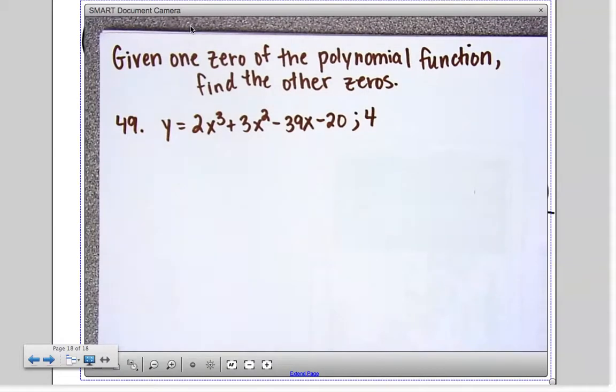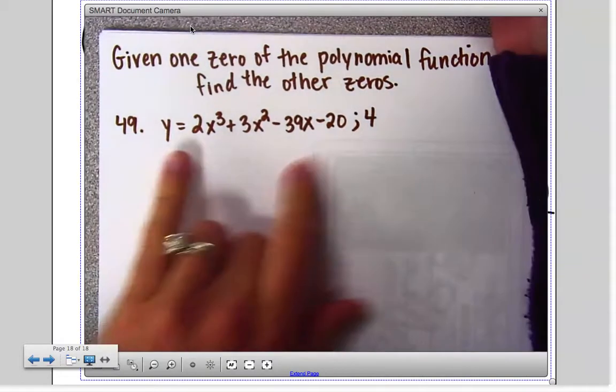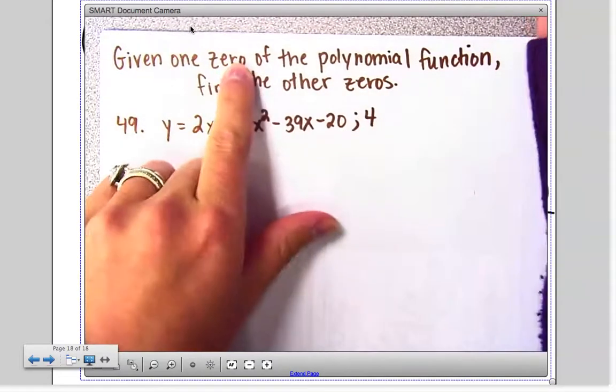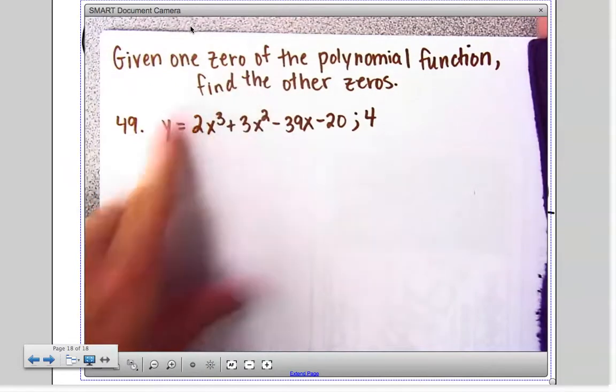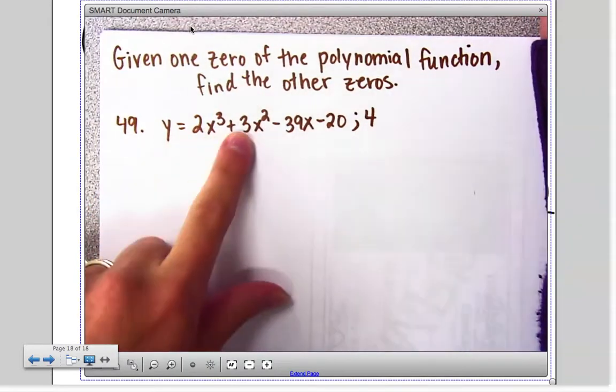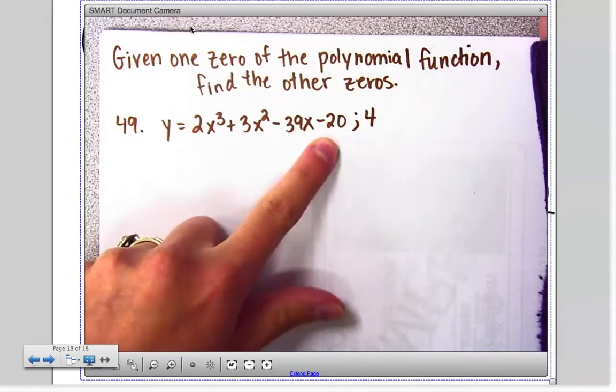Now, with the conversations that we've had in class, let's look at this. Zeros means x-intercept, that's the same thing as an x-intercept. You have the function y equals 2x to the third plus 3x squared minus 39x minus 20.